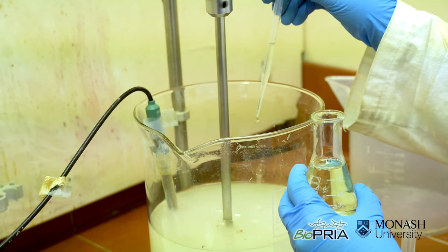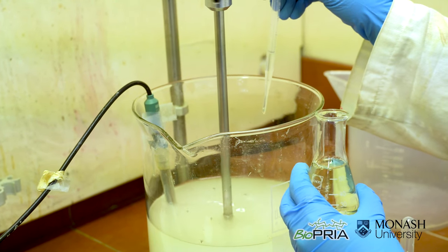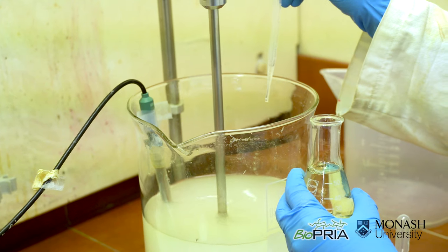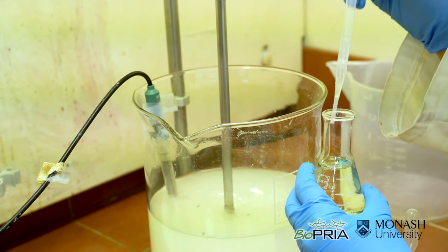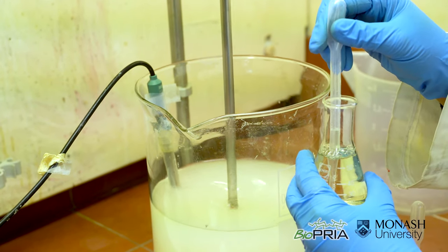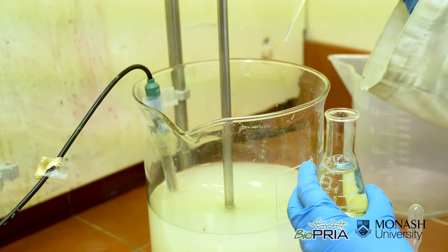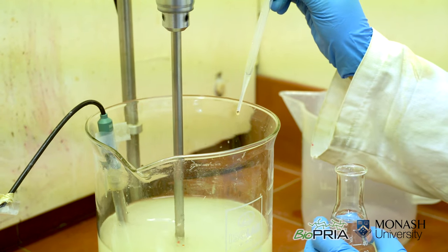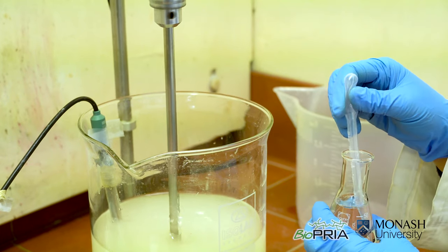Now we are ready to start the oxidation reaction by adding 75 ml of sodium hypochlorite drop wise. This reaction takes around 2 hours. We need to maintain the pH at 10 by adding 0.5 molar sodium hydroxide.